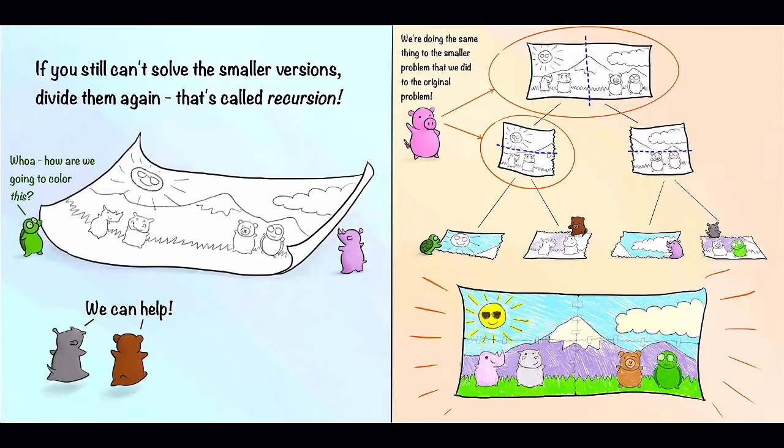Here comes Hippo and Bear who are saying, we can help. Now what are they going to do? They take their big picture and cut it in half again. But then they take each of those halves and cut them in half once more. Now we have four pieces and each one of our friends can color one of the pieces. When we put it all back together, we get our enormous colored picture. Pig points out that we're doing the same thing to the smaller problem, that is cutting it in half, that we did to the original problem. That's what recursion is.